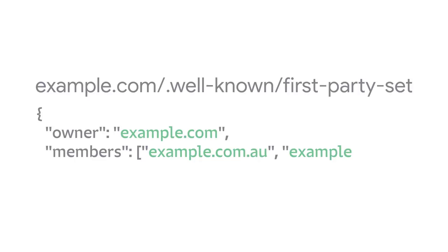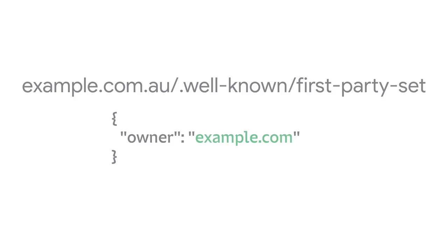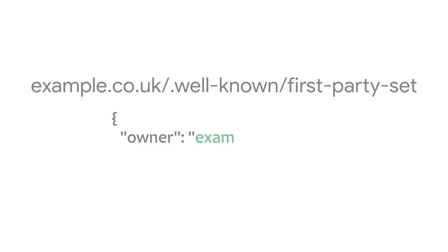For example, imagine that example.com, example.com.au, and example.co.uk all want to be part of the same first-party set owned by example.com. Each of the sites would then serve the following files in their well-known directory. Example.com declares itself as the owner by serving a JSON file at the URL /.well-known/first-party-set. Example.com.au declares itself as being owned by example.com, and so does example.co.uk.